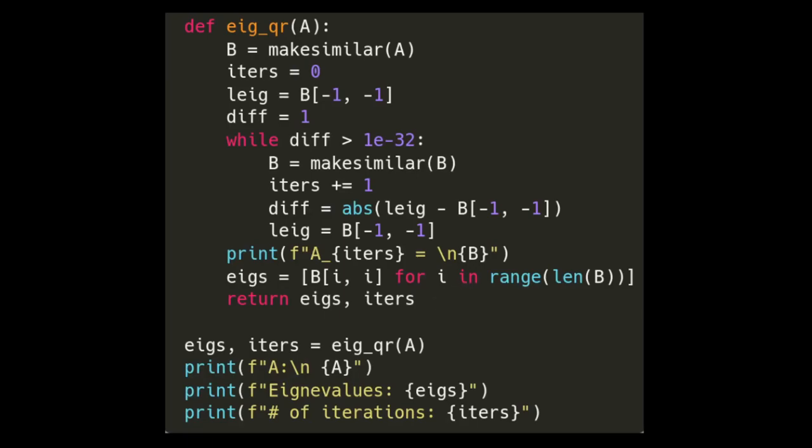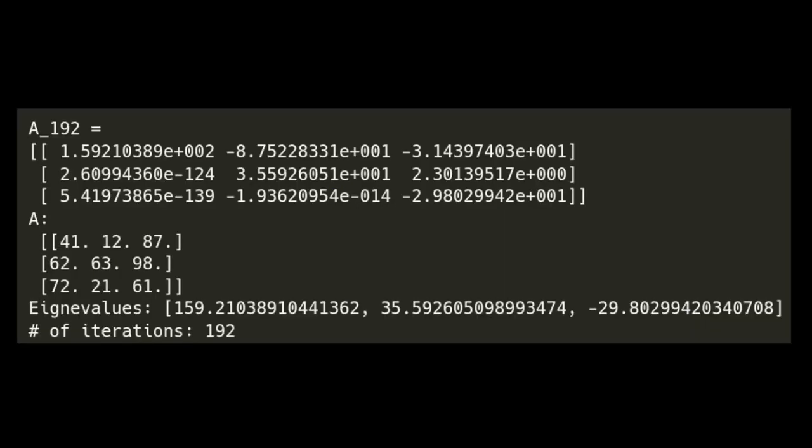You can see then all the rest of this is just set up for what we're going to see in the terminal. And so this is what we end up getting. You can see after 192 iterations, this is the 192nd similar matrix.